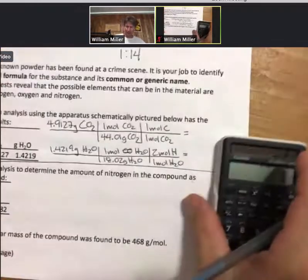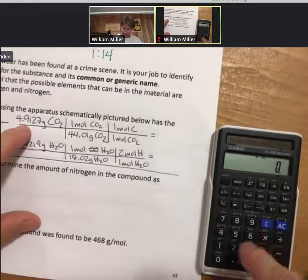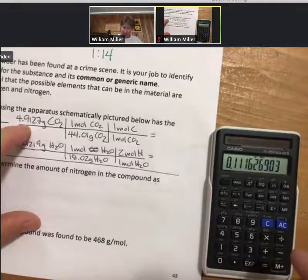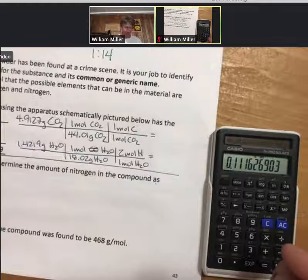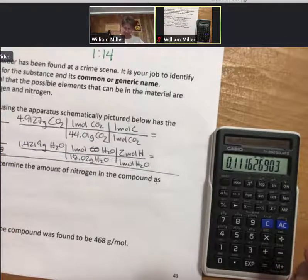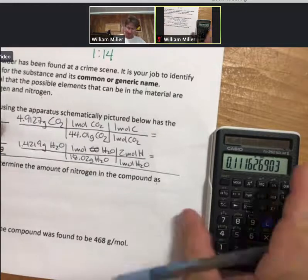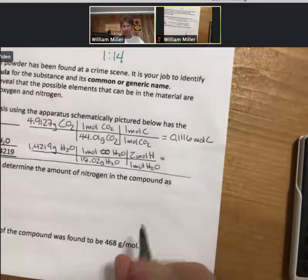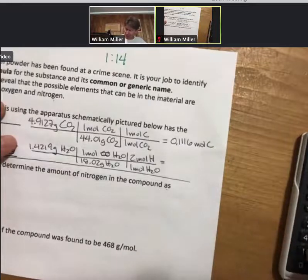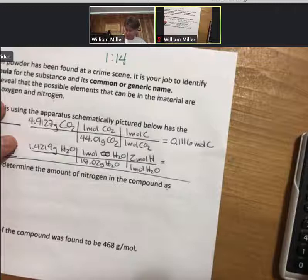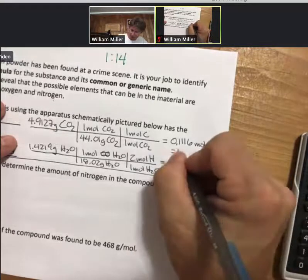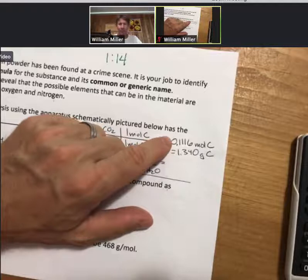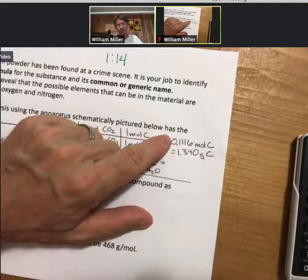So let's multiply this out. 4.9127 divided by 44.01, 0.11. And with all these significant figures in here, I am going to keep four significant figures for this problem. And I'm going to write 0.1116 moles of carbon. And I'm going to multiply that times 12.01 and get 1.340 grams of carbon. So to get this bottom number, I took the top one times 12.01 grams per mole in carbon to get the bottom number.